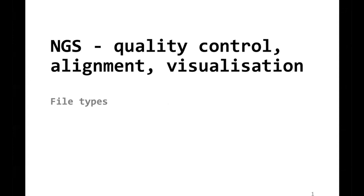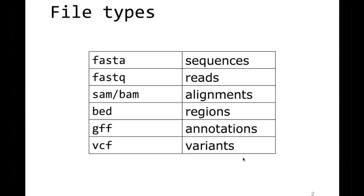This presentation gives you an overview of some of the most frequently used file types in bioinformatics related to next generation sequencing. The file types we will discuss include the FASTA file — used to store genomes, nucleotide sequences in general, and also amino acid sequences.